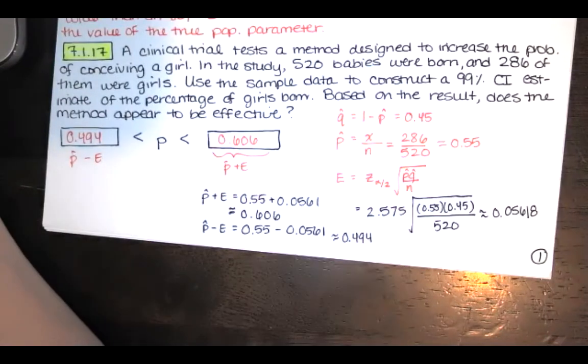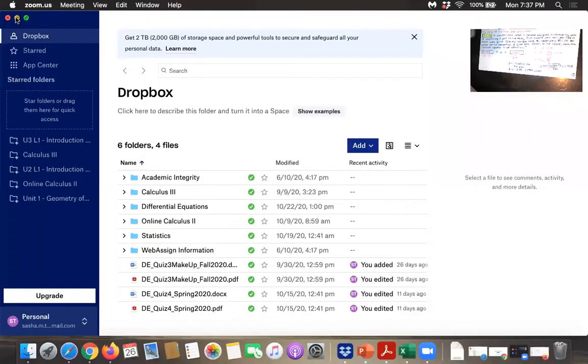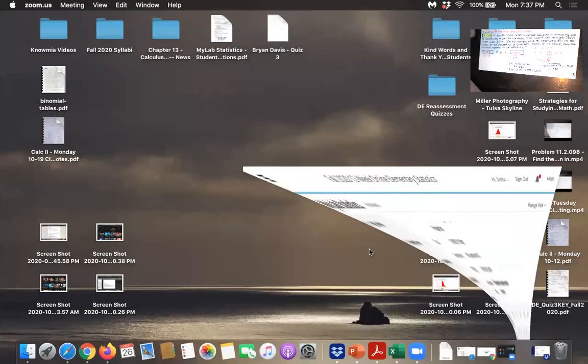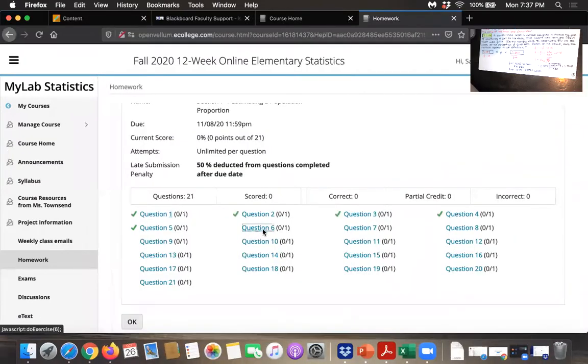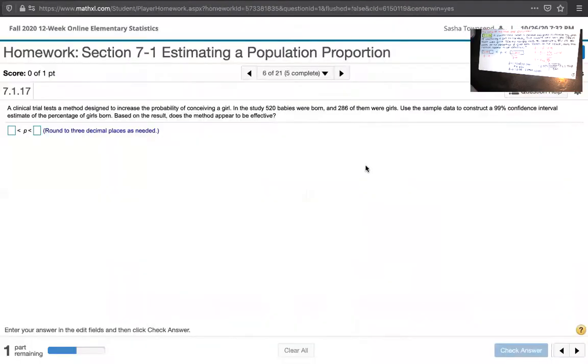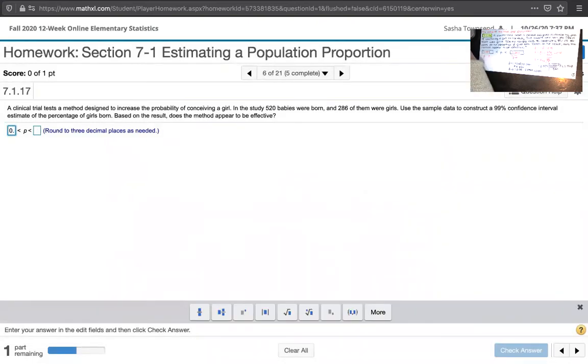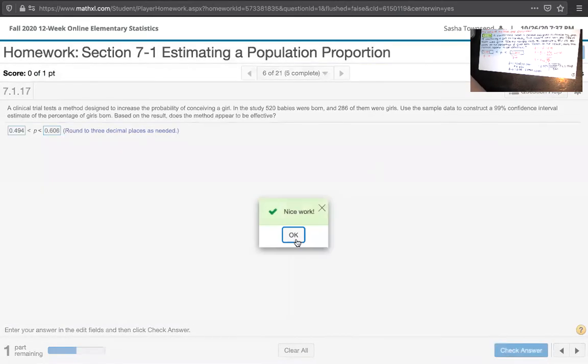So that's our confidence interval. Let's go back to the homework assignment and make sure that we have answered it the way that they want us to. So I have 0.494 as my lower bound and 0.606 as my upper bound. Okay, great.